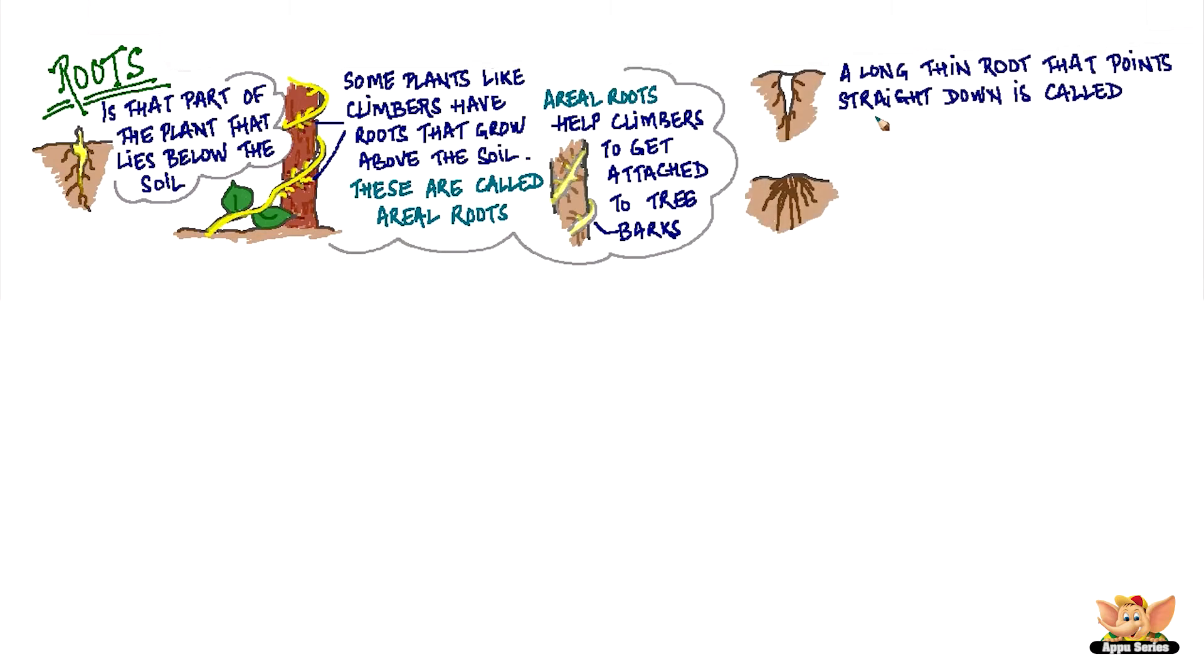A long, thin root that points straight down is called a tap root. For example, carrots.